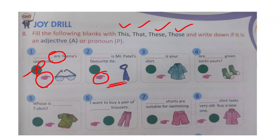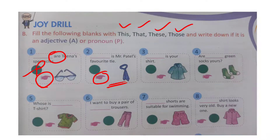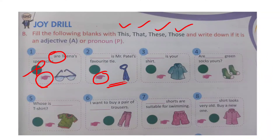Next sentence: 'Dash is Mr. Patel's favorite tie.' The tie is far from the finger. Since it is singular, we use 'that'. 'That is Mr. Patel's favorite tie.' This is also a pronoun — write capital P in the green circle.